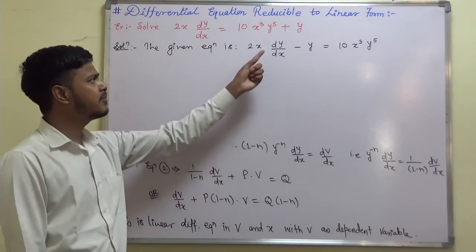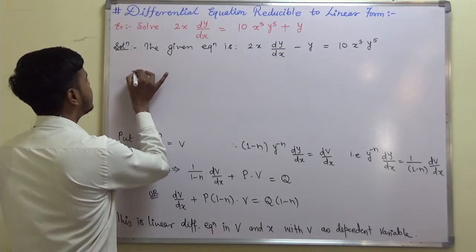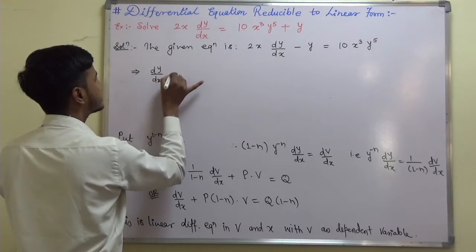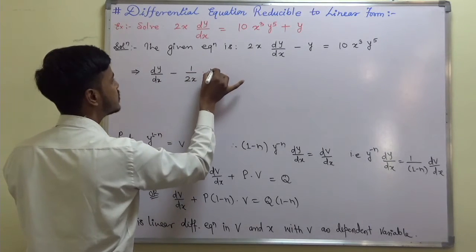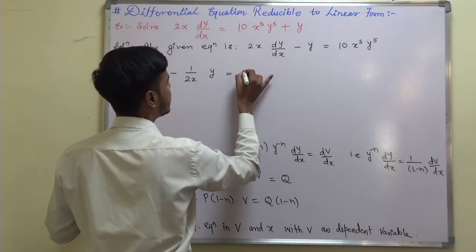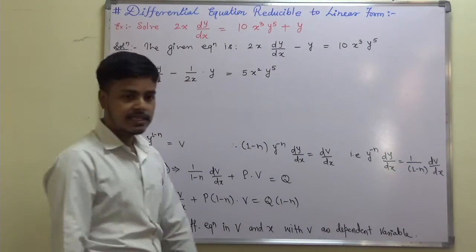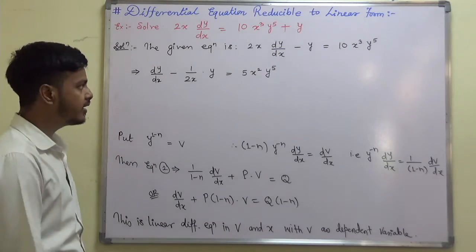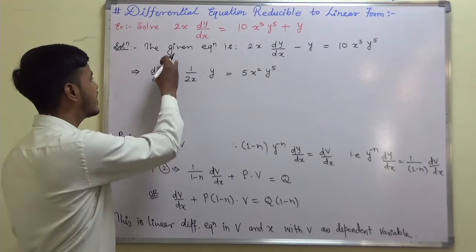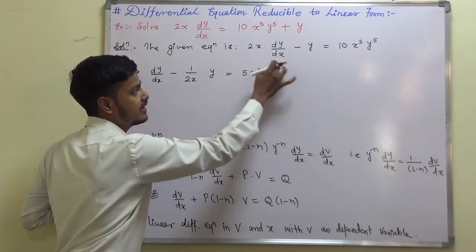To make the coefficient of dy/dx equal to 1, divide by 2x. We get dy/dx − (1/2x)·y = 5x²·y⁵. This has the form of Bernoulli's equation dy/dx + P·y = Q·y^n with n = 5.